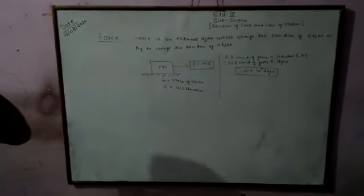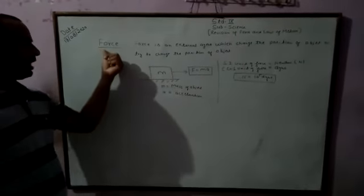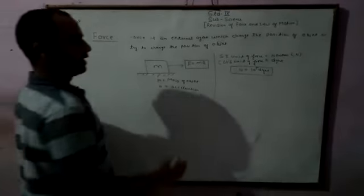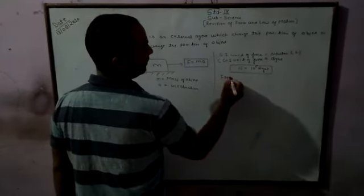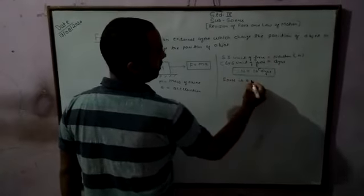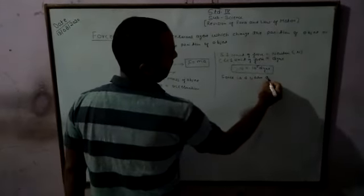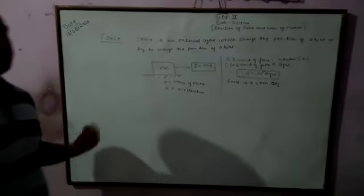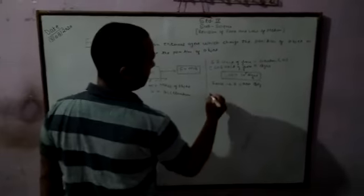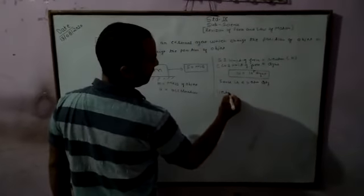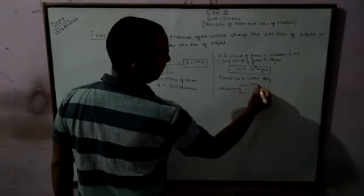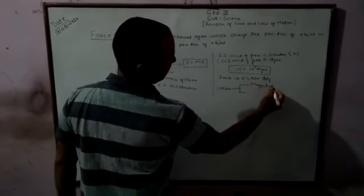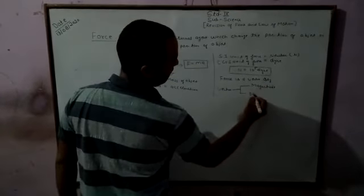Now we can understand which type of quantity force is. Is it a scalar quantity or a vector quantity? Force is a vector quantity. When force is a vector quantity, we have to define two terms. First is magnitude, and second is direction.